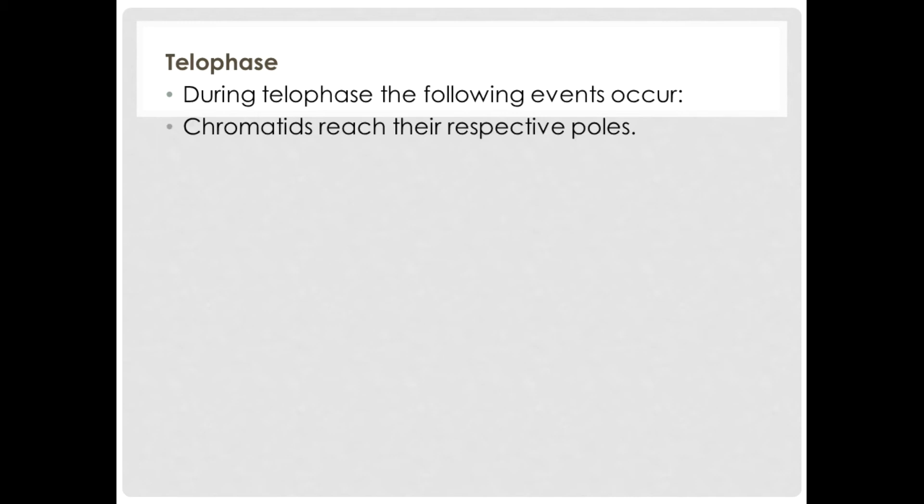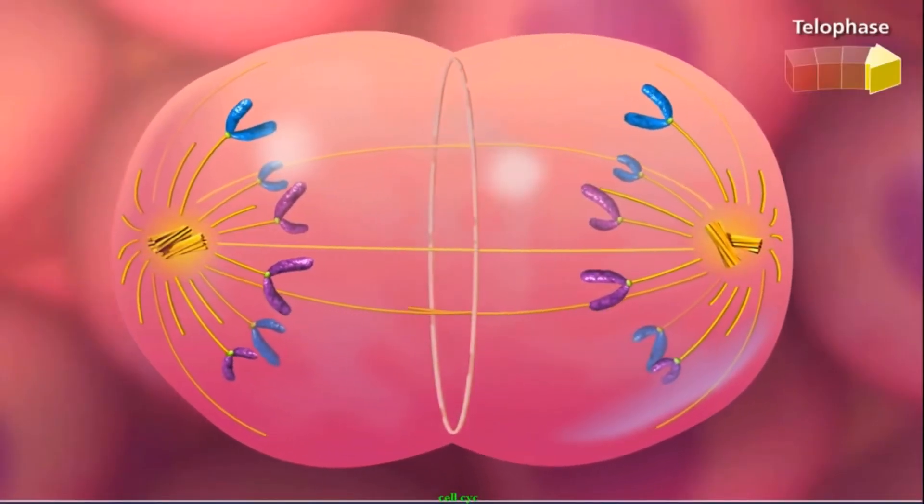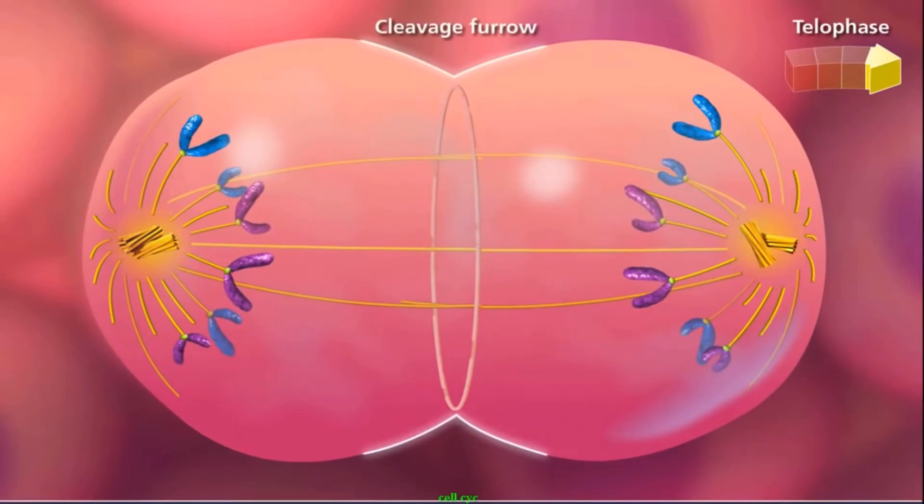Now let's take a look at telophase. During telophase, the following events occur: Chromatids reach their respective poles, nuclear membranes begin to form at opposite poles, and new nuclear envelopes form around each group of chromatids.